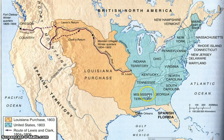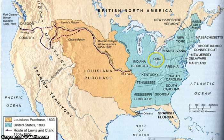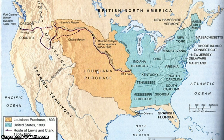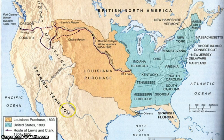Looking at the map, the blue represents the original U.S. — the 13 colonies on the east coast, along with the expanding territories of Tennessee, Kentucky, Ohio, and Indiana. After the Louisiana Purchase, the U.S. suddenly owned all this land out west, which was meant to promote people moving there to start new farms and agriculture. There is still a large area of Spanish territory, which will be addressed later.